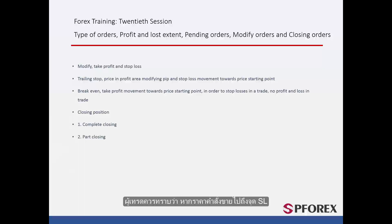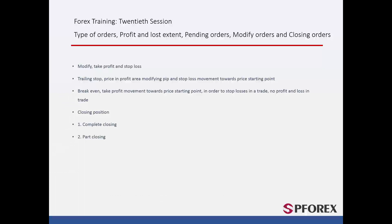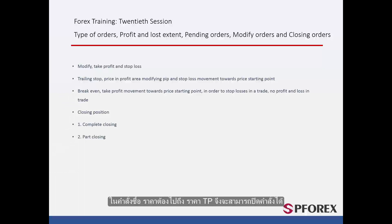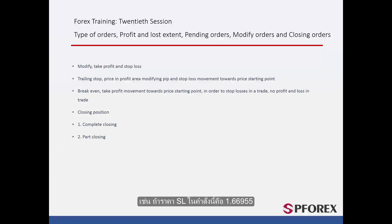Traders should take into consideration that in a sell order, if price meets the SL point the order will be closed, while if price reaches the TP level the order will not be closed unless it passes TP plus the amount of spread. In a buy order, price must reach the TP price for the order to be closed. If price moves towards SL price, the order will be closed even if it does not reach SL price exactly — SL price plus spread will be closer to the order price than the sole SL price. For example, if the SL price is 1.66955 and the spread on GBP/USD is 2 pips, then the order will be closed at 1.66975.